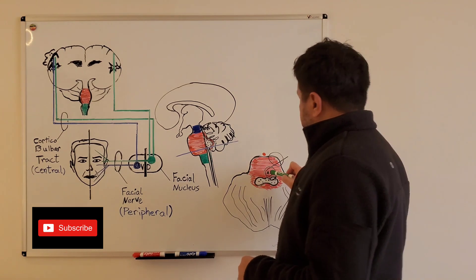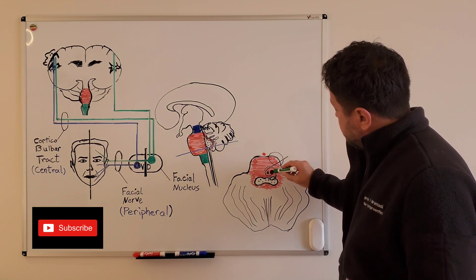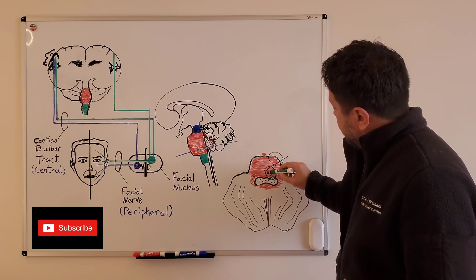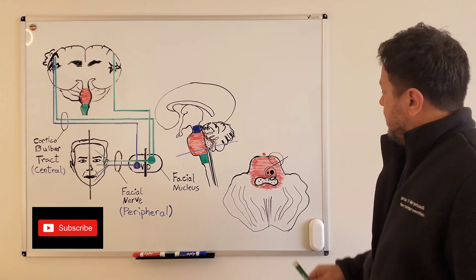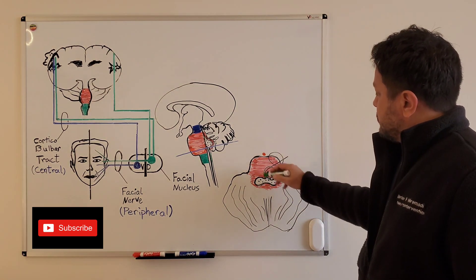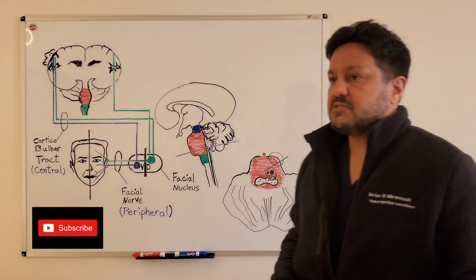The facial nerve nucleus is not very big, so for example a stroke causing weakness or defect in just this area is very uncommon. Typically other areas of the pons will also be involved and the patient would present with other symptoms.